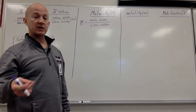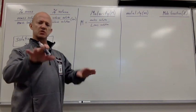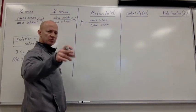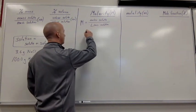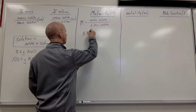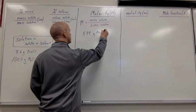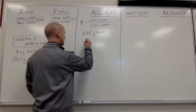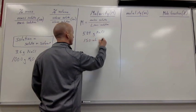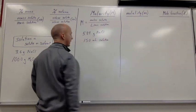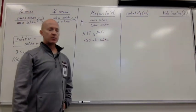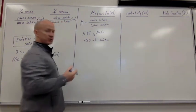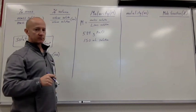All right? So if you are given an amount in grams that's being dissolved, let's just do that. Let's say we have 5.84 grams of sodium chloride, right? And we dissolve it with enough water to make 150 milliliters of solution. Okay? So 5.84 grams of NaCl, we dissolve it in enough water to make 150 milliliters of solution. How do we find the molarity? Okay? The first thing we need to do is calculate the number of moles that we have.